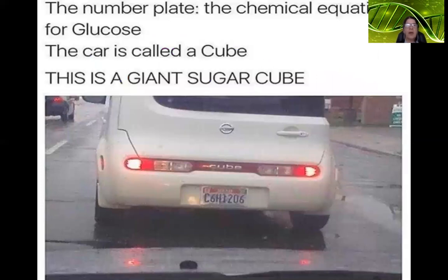Look at this cube — it has the formula for glucose, C6H12O6. So the car is called 'cube,' therefore this is a giant sugar cube. And this is the end of our lesson on carbohydrates. See you next time.